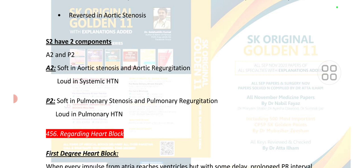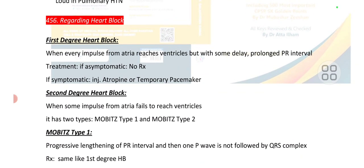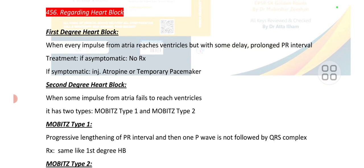Point number 456 is regarding heart block. In first degree heart block, every impulse from the atria reaches the ventricle but with some delay — there is a prolonged PR interval. Treatment: if asymptomatic, no treatment; if symptomatic, injection atropine or a temporary pacemaker.